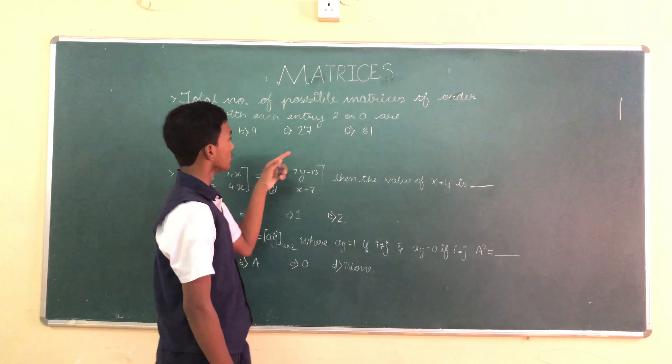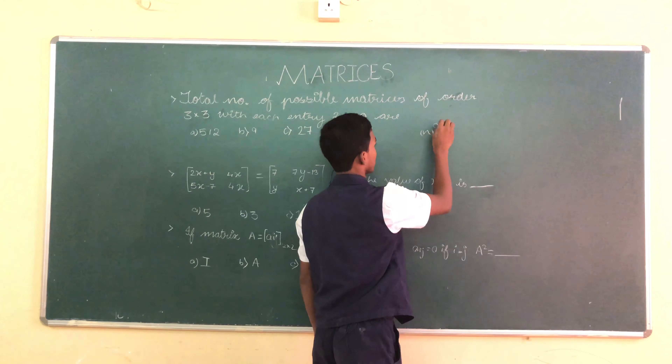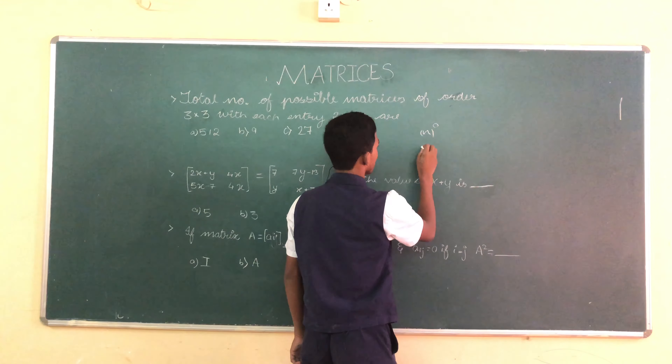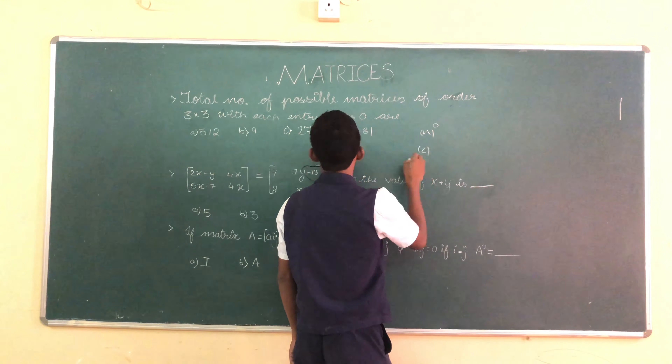Third question: total number of possible matrices of order 3×3 with each entry 2 or 0. Option A: 512. Option B: 9. Option C: 27. Option D: 81. The formula is number of terms raised to the power of the order. Number of terms are 2 (i.e., 2 or 0), so it's 2 raised to the power 3×3, which is 2⁹ = 512. So the correct answer is option A, 512.